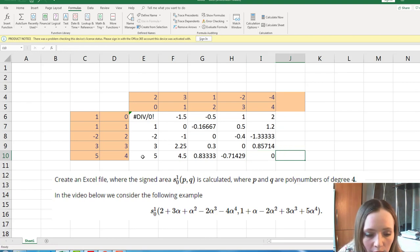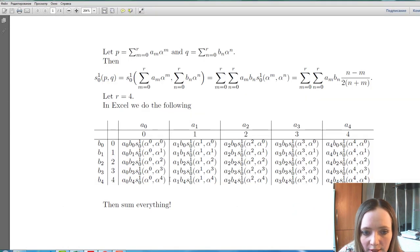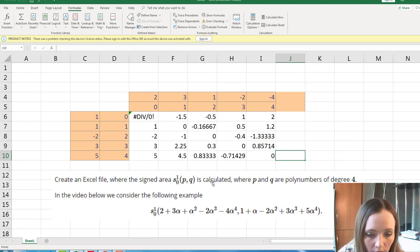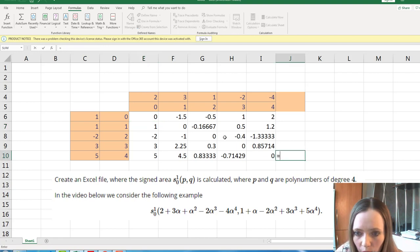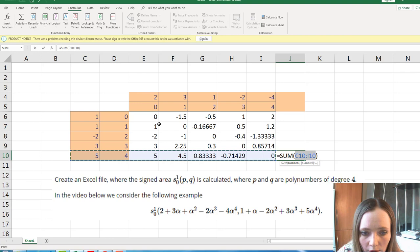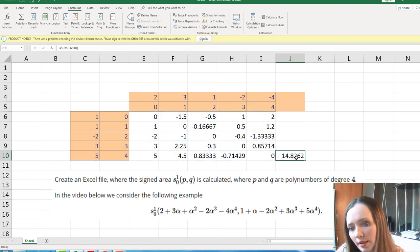So now we have constructed this part of the table. These are the summands of this sum. Now we need to sum up everything. So in Excel we have this nice tool summation. But the only thing is we need to change this cell. It should be zero. And now we sum up everything. We need these cells. And the answer is here.